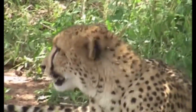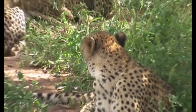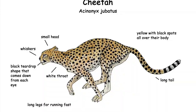Cheetahs have various modifications that improve their sprinting ability. Their legs are proportionally longer than those of other big cats. An extended spine increases stride length at high speeds. They have unretractable claws, unique paw pads for extra traction, and a long tail for balance.